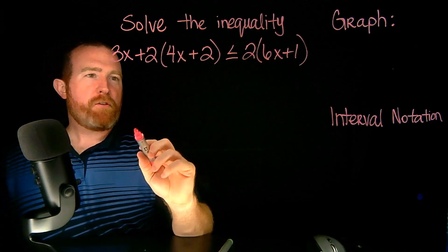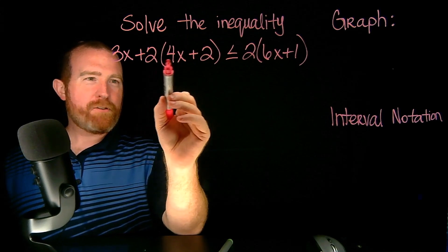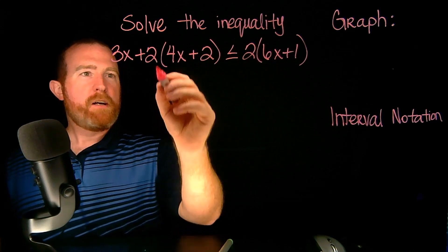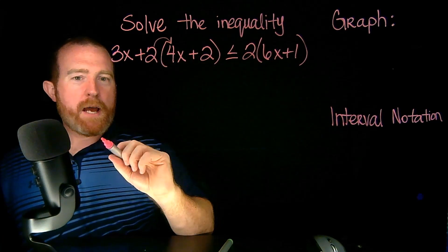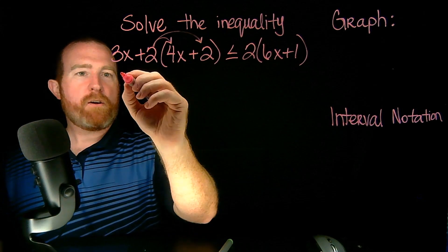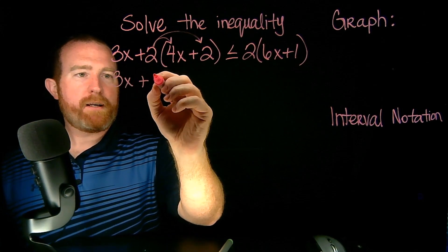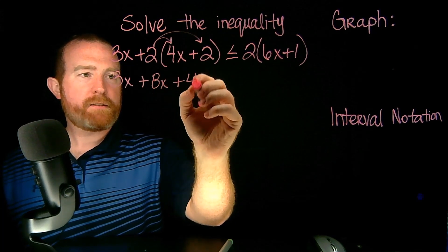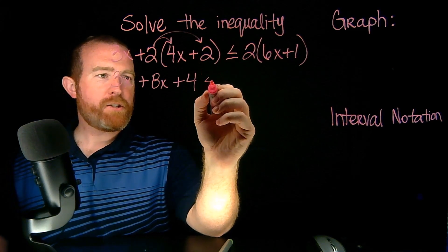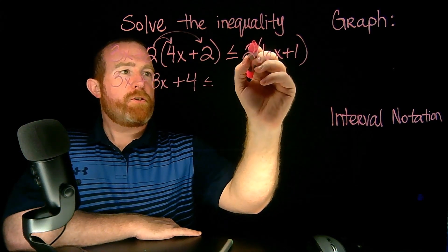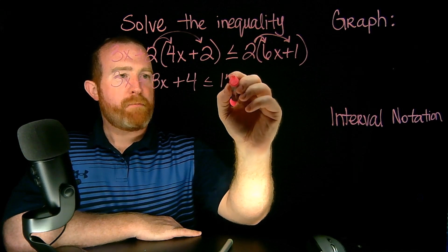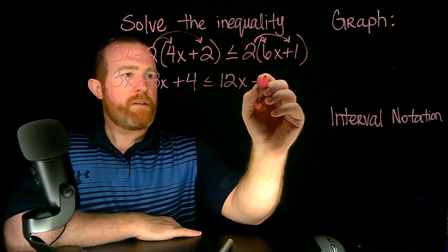Remember, anytime you're working with these, the first thing you want to do is combine your X's, but we can't do that yet because we need to distribute — we don't know what this final quantity is going to be. So let's take this 2 and distribute it to the 4, and remember you also have to distribute to everything in the parentheses. So here this will be 3X plus 8X plus 4. 2 times 4 is 8, 2 times 2 is 4. Over here I'll have 2 times 6 and 2 times 1. So 2 times 6 gives me 12X, and 2 times 1 gives me 2.